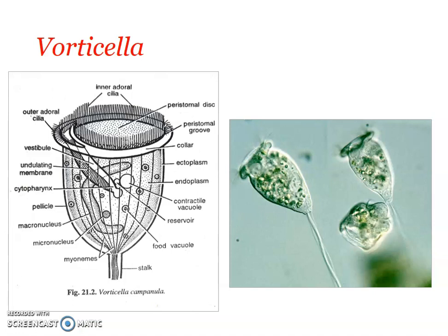Since Vorticella is sedentary, only the stalk moves — the stalk is contractile and can reduce and increase in length — and the cilia can also be seen moving. So the movement of cilia, how it ingests food, how cilia move to draw water currents into the mouth — all of this can be observed under the microscope. Vorticella is a microscopic stalked form with an inverted bell-shaped, asymmetrical body. Due to this bell shape, it is also known as the bell animal, or Glockentierchen.